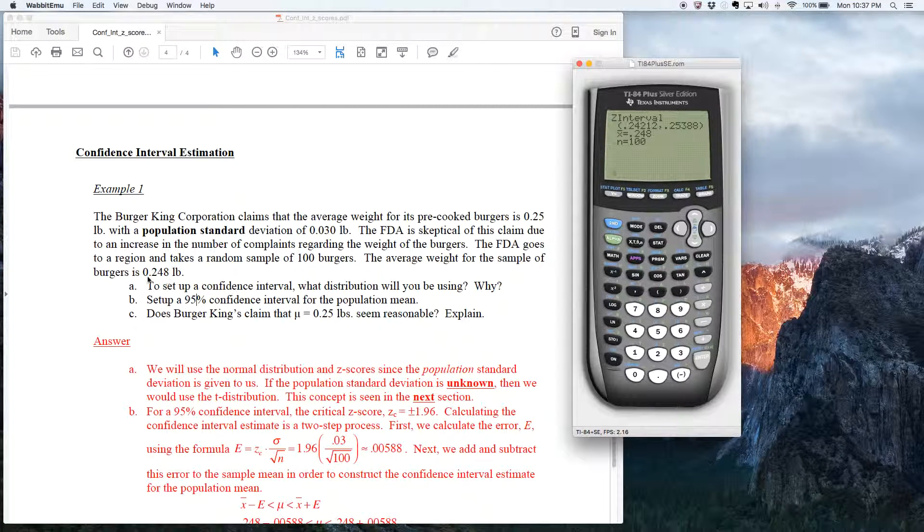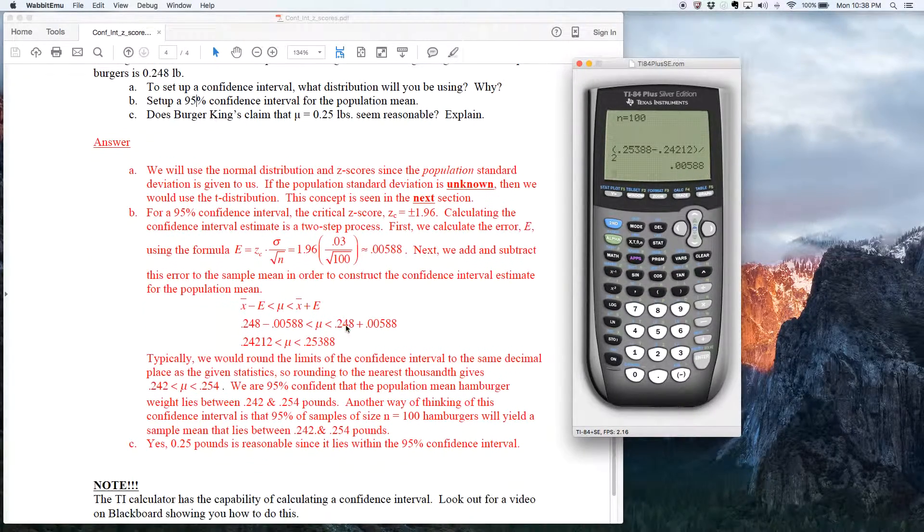So the error was added to the 0.248 to create that 0.25388 number, and the error was subtracted from the 0.248 to create this 0.24212 number. So in other words, the distance between these two numbers, the lower limit for the confidence interval and the upper limit for the confidence interval is actually double the error. So if you take these numbers, 0.25388 subtract off 0.24212, and divide that in half, notice you get 0.00588, which is the error.